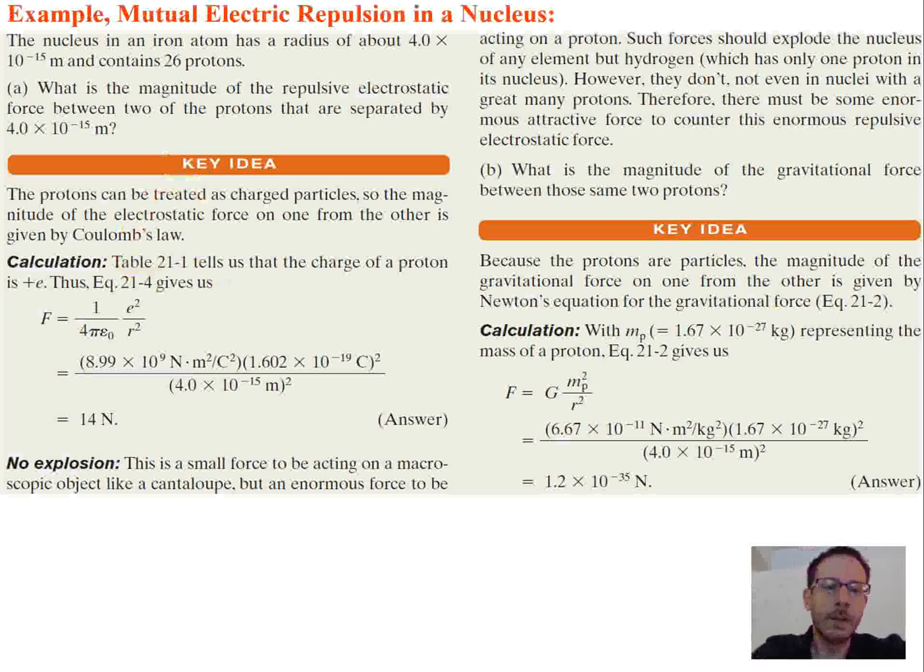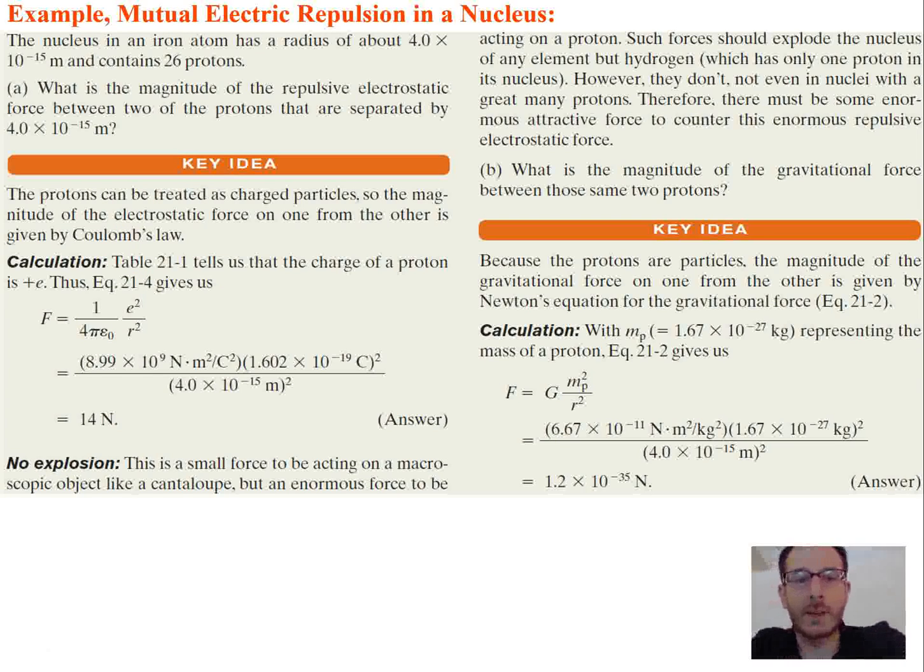So let's look at this example. The nucleus of an iron atom has a radius of 4.0 times 10⁻¹⁵ meters and has a total of 26 protons. So what is the magnitude of the repulsive electrostatic force between two of the protons? So say we had a nucleus and this was the size of the nucleus. You had a proton on one end and a proton on the other end of the nucleus. And you're trying to figure out what the force in between them is. Well, we know protons are both positive. They're always going to be positive. So since they're both positive charges, we would expect that the force is going to be outward. So the force is going to be in that direction. Interesting, especially considering a nucleus stays together and doesn't get pushed apart.